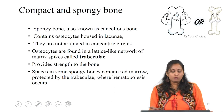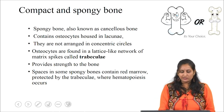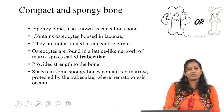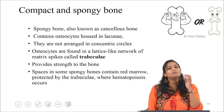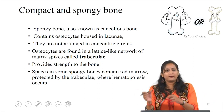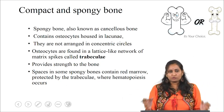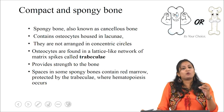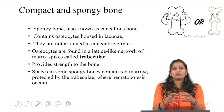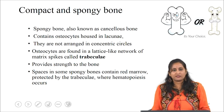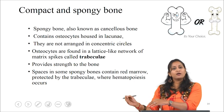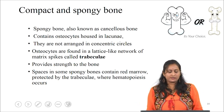Spongy bone, also called cancellous bone, unlike compact bone, is not made up of concentric rings. Instead, it is made up of a lattice-like network of matrix spikes called trabeculae, which provide strength to the bone. The spaces in some spongy bones contain red marrow protected by the trabeculae, where hematopoiesis occurs. Hematopoiesis is the process of formation of blood cellular components.